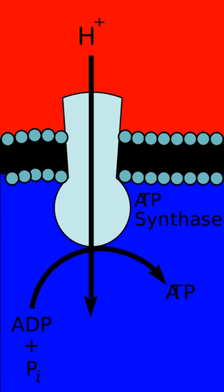The pathway of electrons is as follows: NADH is oxidized to NAD+, reducing flavin mononucleotide to FMNH2 in one two-electron step. FMNH2 is then oxidized in two one-electron steps through a semiquinone intermediate. Each electron transfers from FMNH2 to an Fe-S cluster, then from the Fe-S cluster to ubiquinone. Transfer of the first electron results in the free radical form of Q, and transfer of the second electron reduces the semiquinone form to the ubiquinol form, QH2. During this process, four protons are translocated from the mitochondrial matrix to the intermembrane space. This current powers the active transport of four protons to the intermembrane space per two electrons from NADH.